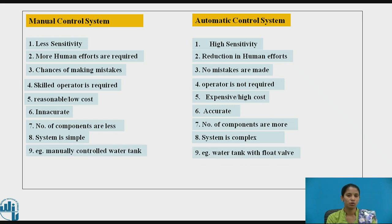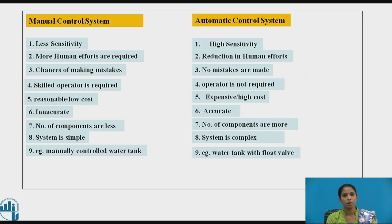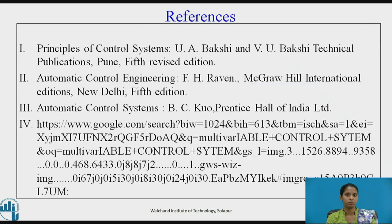Here is an example of a manual control system — manually controlled water tank — and the example of an automatic control system is a water tank with a float valve. These are the references.